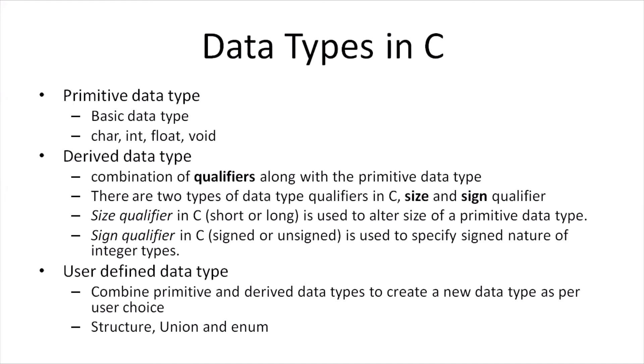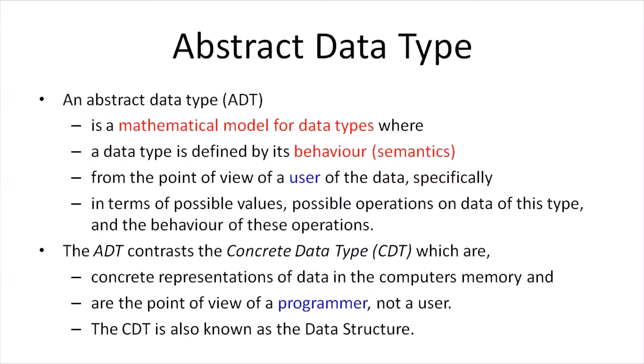In C, there are three different categories of data types. The first is the primitive data type, which consists of the basic data types supported by C: char, int, float, and void. The second category is the derived data type, which is a combination of qualifiers along with the primitive data type. C supports two types of qualifiers: the size qualifier, which alters the size as short or long, and the signed qualifier, which specifies whether an integer can hold negative values. The third category is the user-defined data type, which combines primitive and derived data types. C provides concepts of structure, union, and enum to implement user-defined data types.